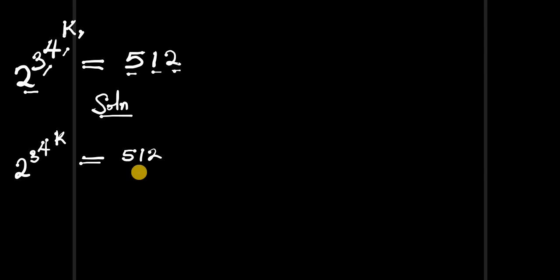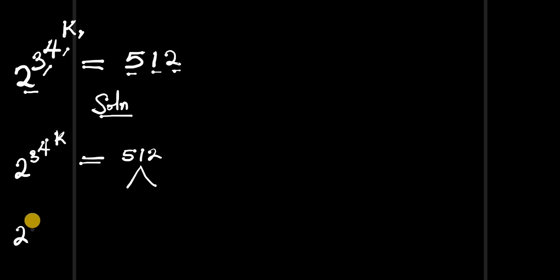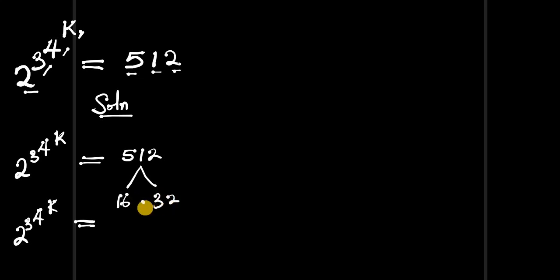Now we can go ahead and split 512 into two numbers that, when multiplied, give 512, and one of those numbers must be an even number. So you're going to have 2^(3^(4^k)) equals 16 times 32, since 16 times 32 is 512. And 16 here is a perfect square.